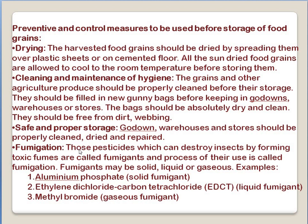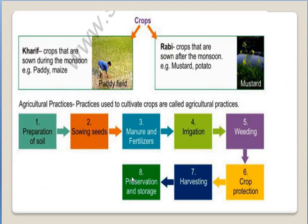Pesticides that destroy insects by forming toxic fumes are called fumigants, and fumigant application is the last option — it is a chemical treatment. Fumigants come in three categories: solid, liquid, and gaseous. In solid fumigants, we have aluminum phosphate, very commonly available. In liquid fumigants, we have ethylene dichloride and carbon tetrachloride, known as EDCT. In gaseous fumigants, we have methyl bromide. These produce fumes that repel insects and pests from the stored grains.